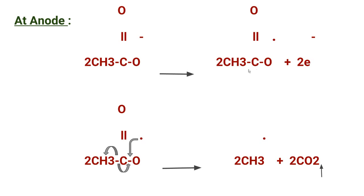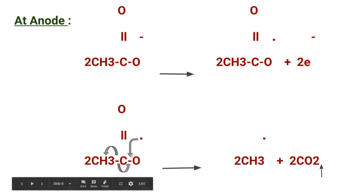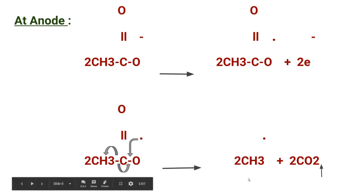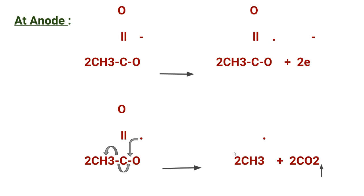At the anode, the acetate ion gives up two electrons to form two acetate radicals. One electron from the C–O bond and one from another bond form a double bond, and the carbon dioxide molecule is eliminated. The remaining bond jumps onto the methyl group, forming two methyl radicals. A free radical is an atom, molecule, or ion that has an unpaired valence electron.